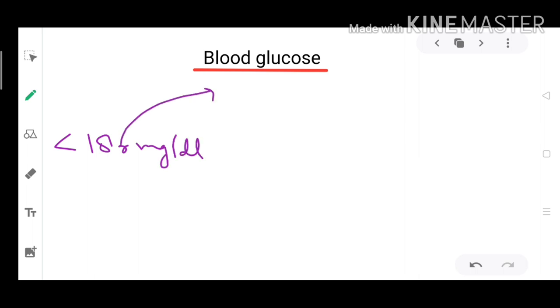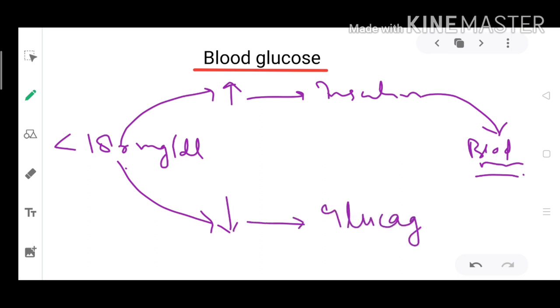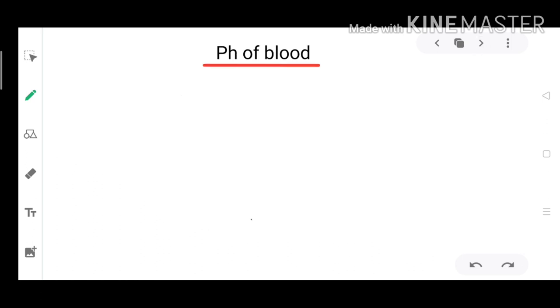Whenever blood glucose increases, body releases insulin which brings back blood glucose levels to normal. So our blood glucose is maintained in the range of less than 180 mg per deciliter.